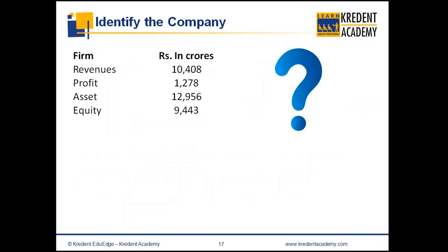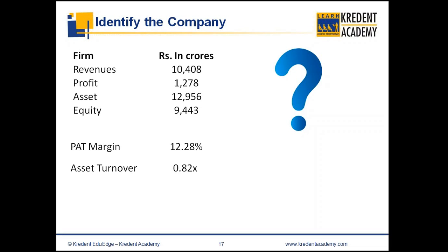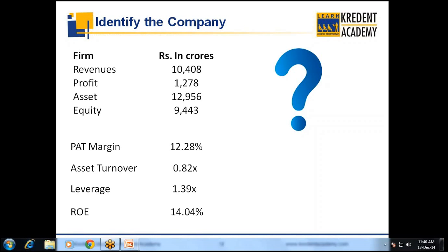Now for the second example — you should be warmed up. Guess this company: revenue of 10,000 crores, profit of 1,200 crores, assets employed of 13,000 crores, and equity of 9,500 crores. The characteristics are: PAT margin of 12%, asset turnover of 0.8 times, leverage of 1.4, and return on equity of 14%. What are the characteristics of this business? Someone says manufacturing — why?